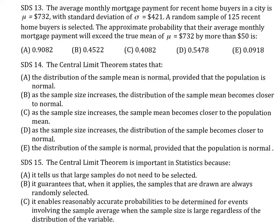In problem 13, after reading this, you see that you have information on the mean and standard deviation. You need to calculate the probability that the average monthly mortgage payment will exceed the true mean, 732, by more than $50. All you have to do is calculate the probability that x-bar is more than $782. That's the mean plus 50. So standardizing that with the new mean, you should be able to get the answer.